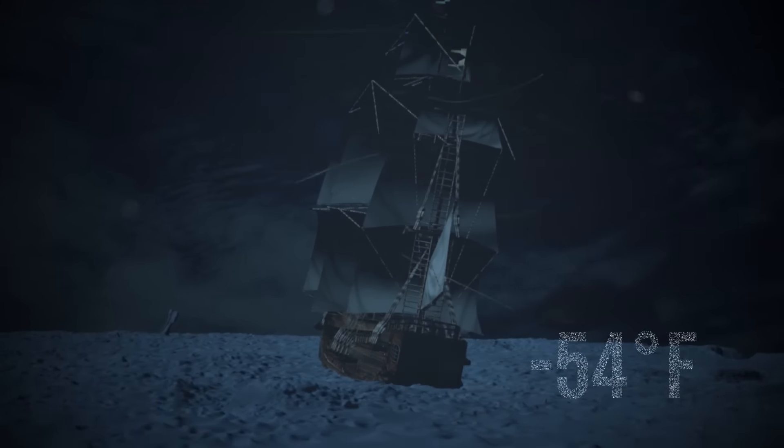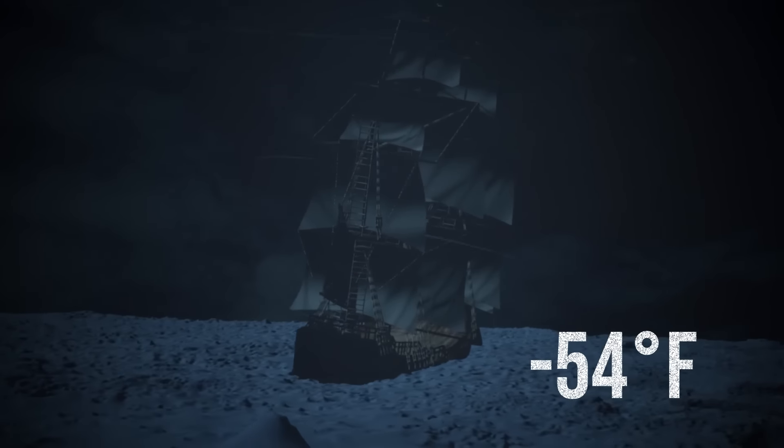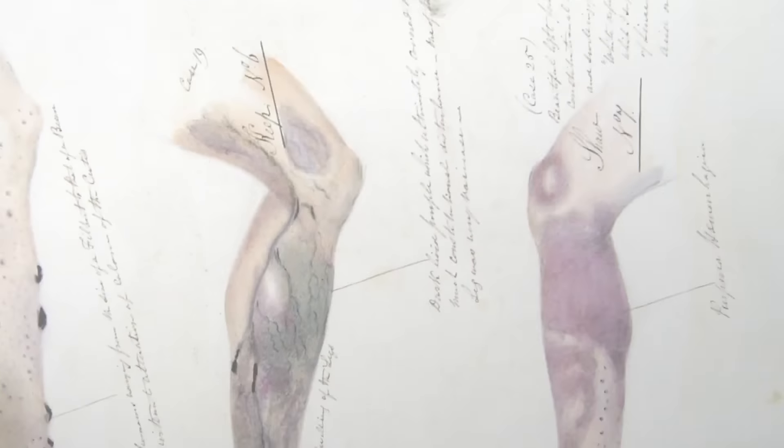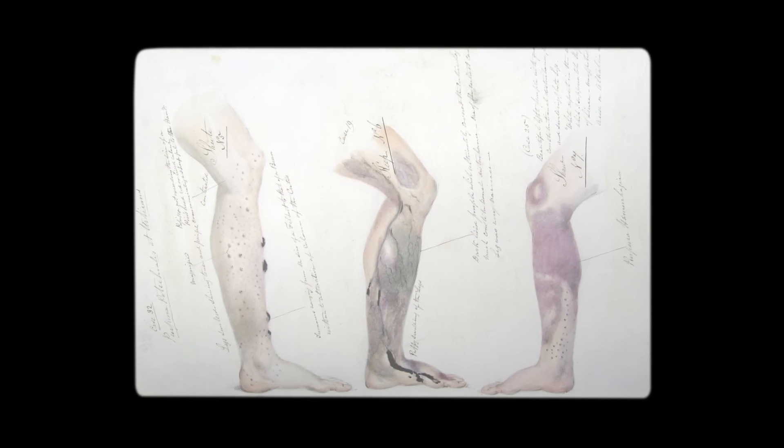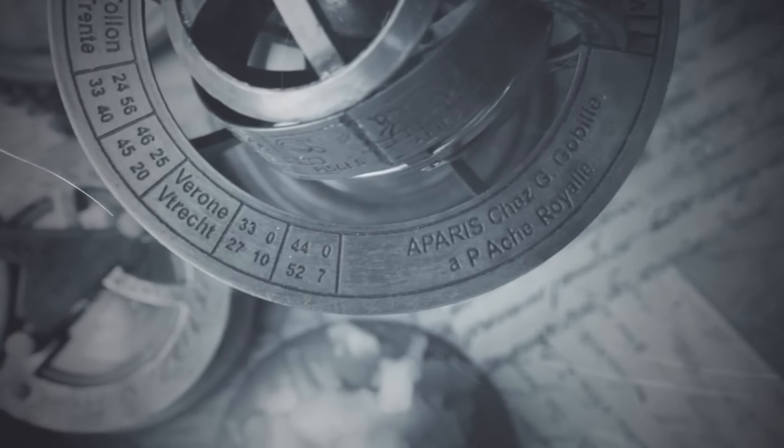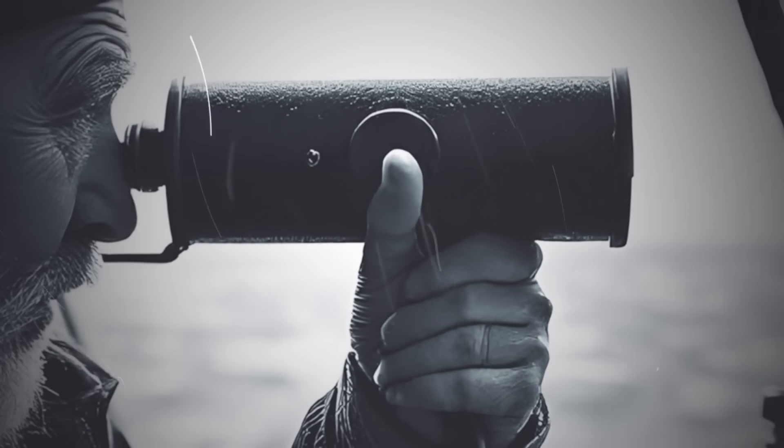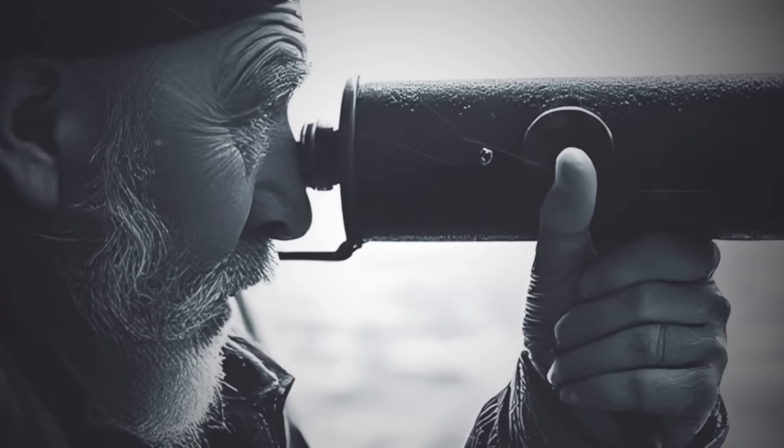Temperatures could drop as low as minus 54 degrees F overnight. Conditions on board weren't much better. Luckily, Franklin's ships had heating systems that may have provided some comfort. The men were regularly checked for scurvy, which was a constant threat due to the lack of fresh food. Scientific observations were a key part of the mission, but the cold made them dangerous. Metal instruments could stick to the skin, and sweat could freeze, causing frostbite. Hypothermia was a constant risk, leading to confusion and unconsciousness if it wasn't treated in time.